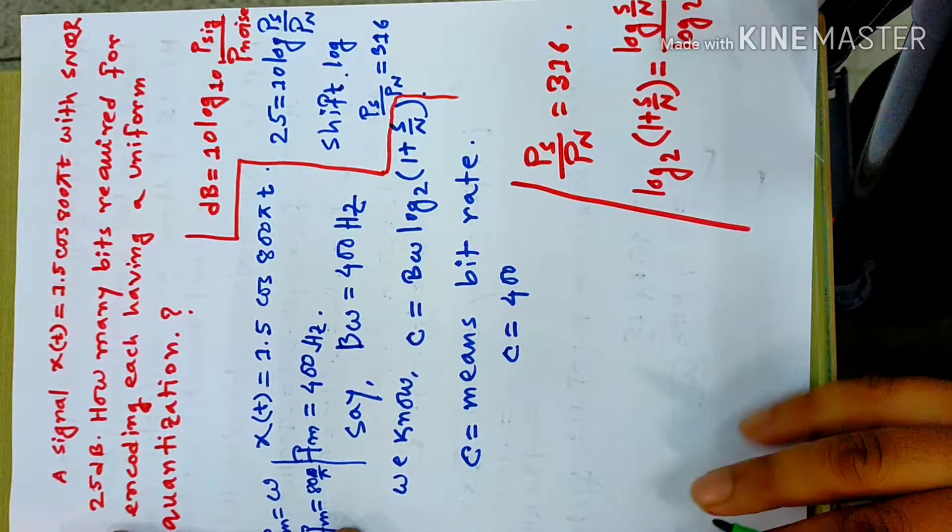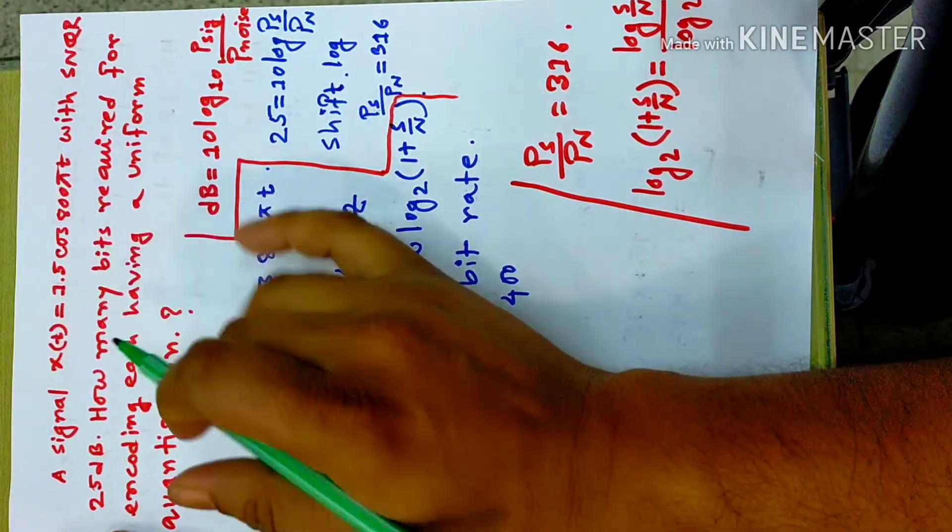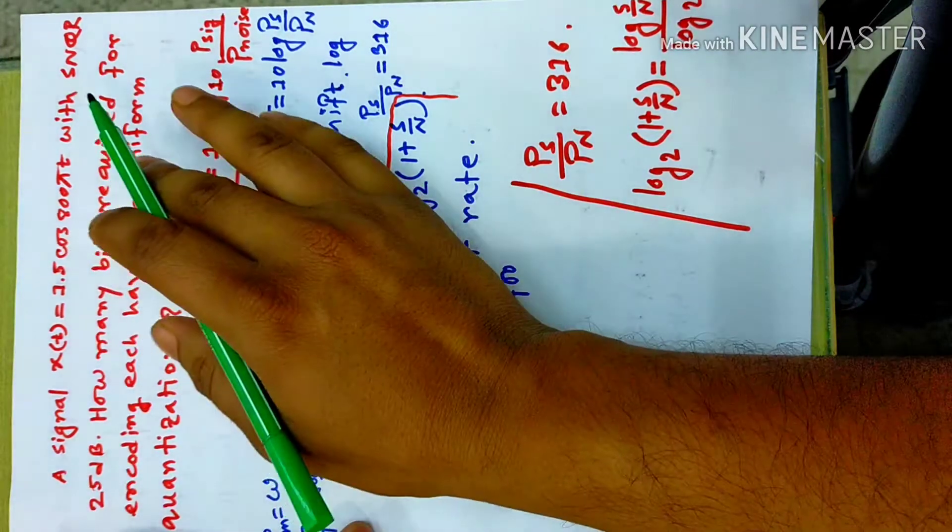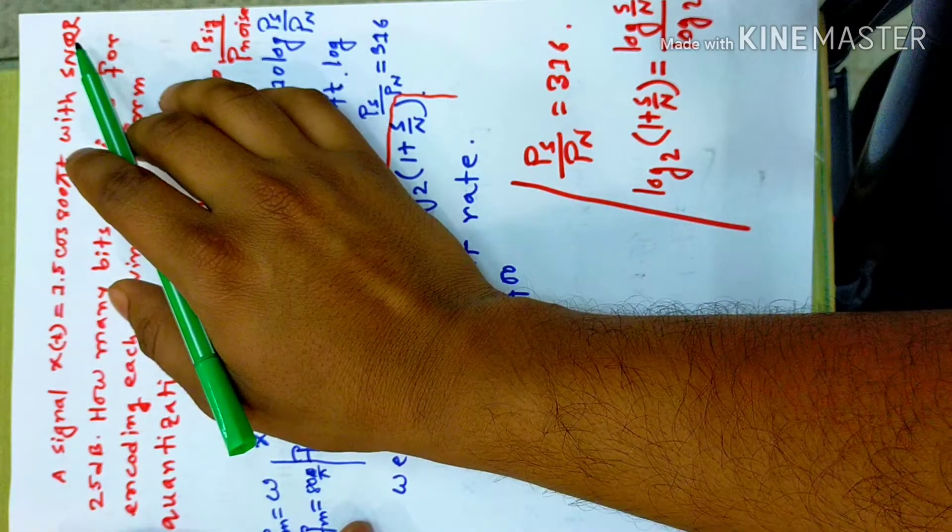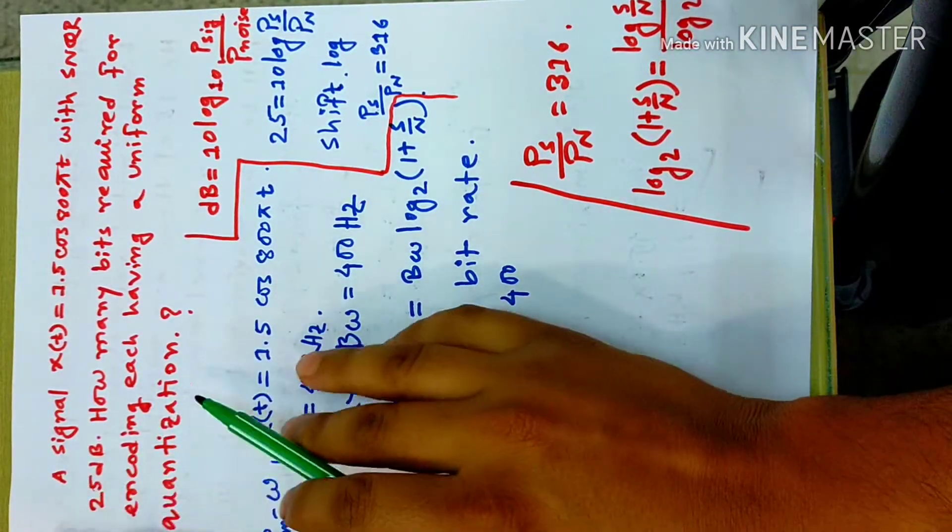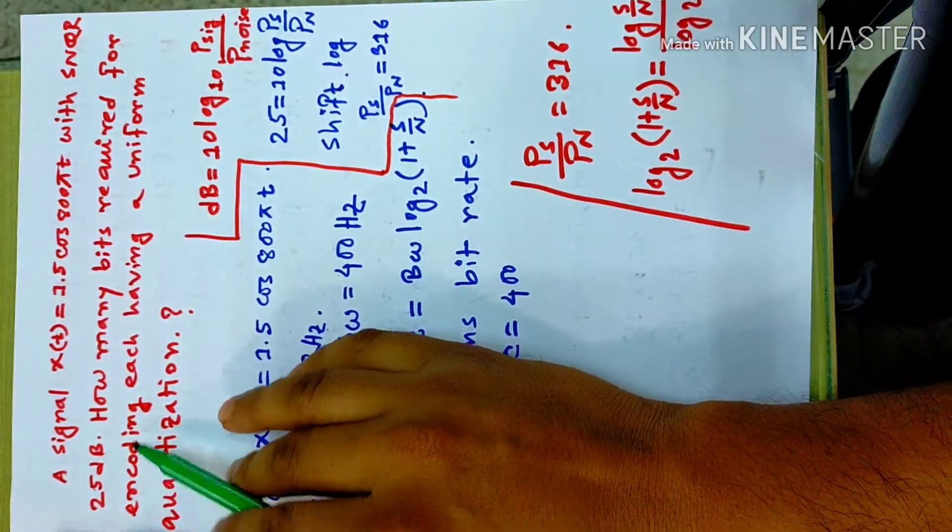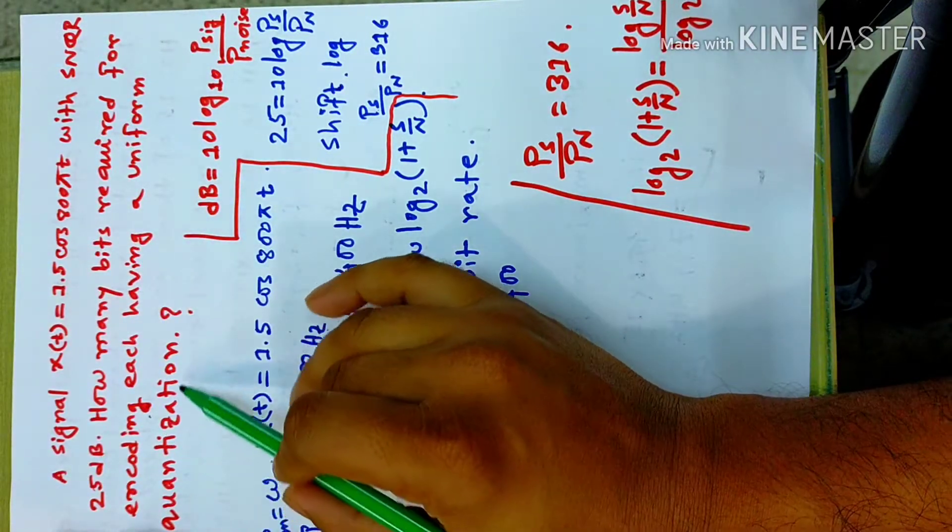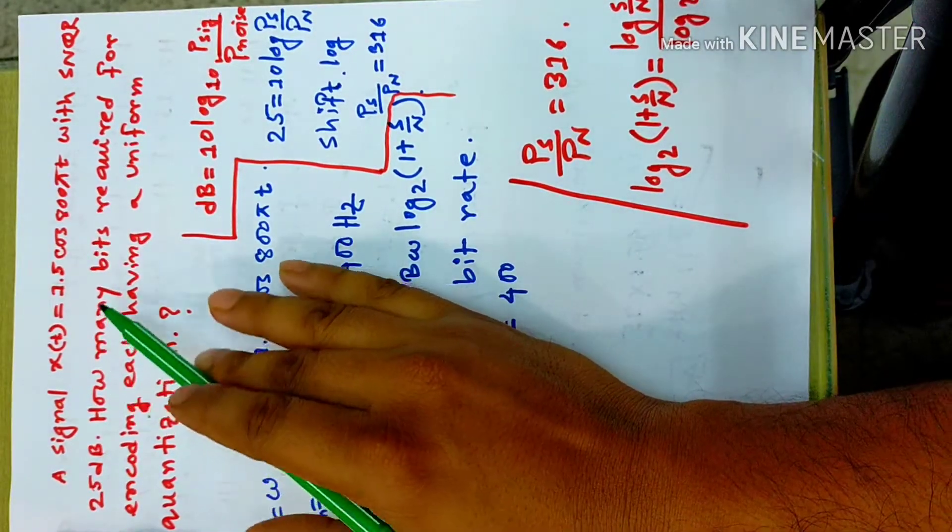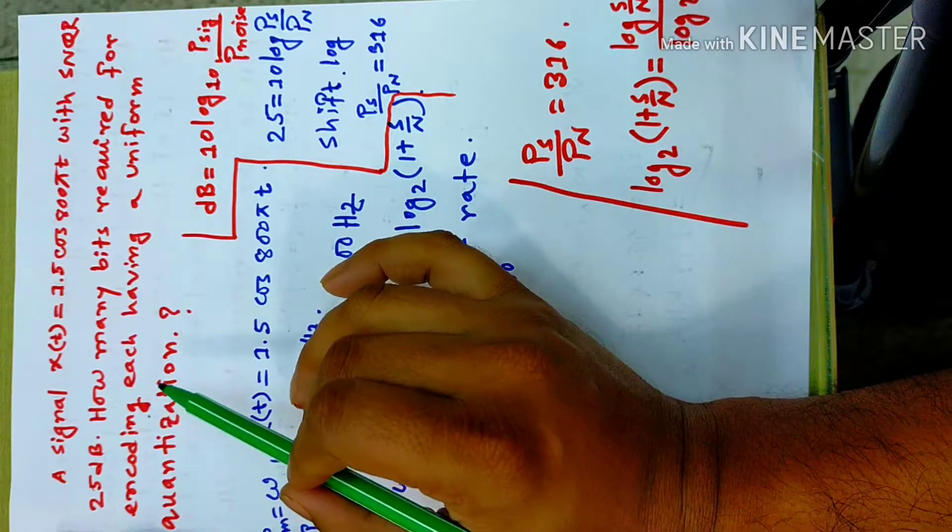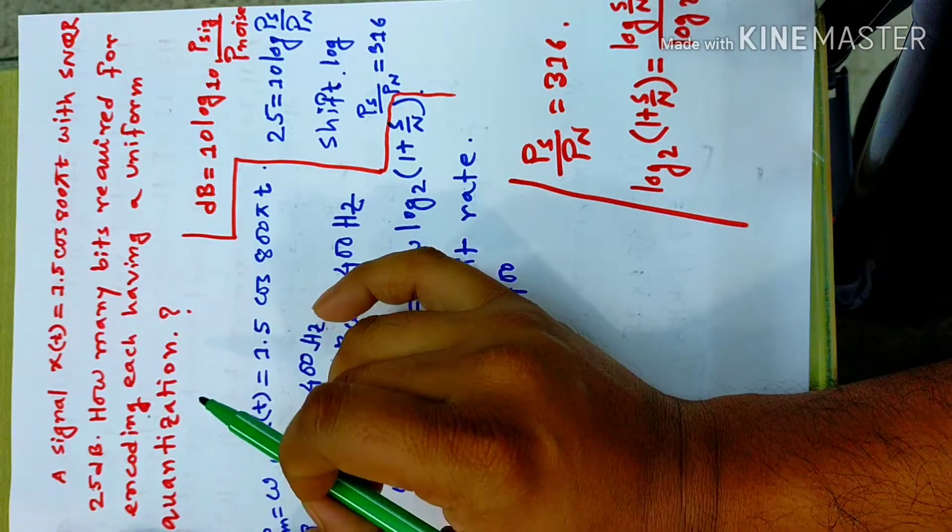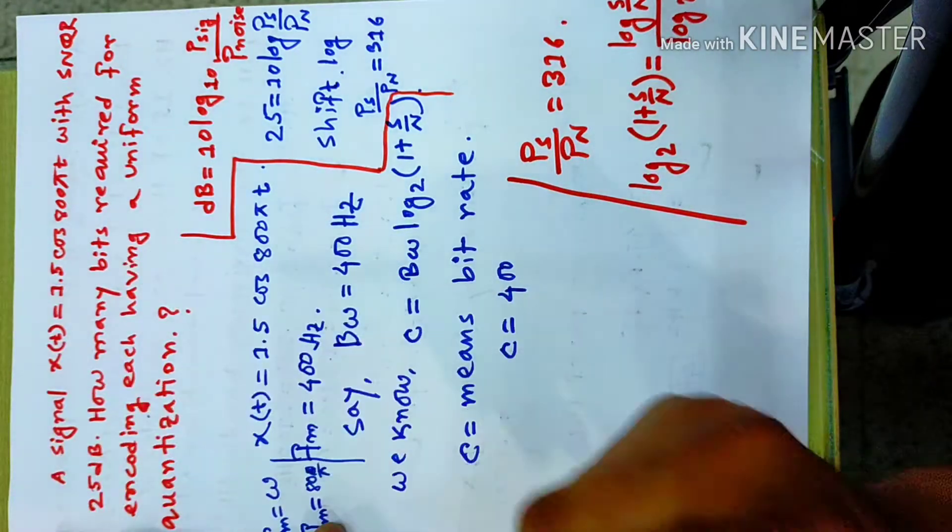This is a signal. This signal is very important. With SNQR, that means signal-to-noise quantization ratio, 25 decibels. How many bits are required for encoding it having a uniform quantization? This is how many bits required for encoding it having uniform quantization. Uniform quantization is the same.